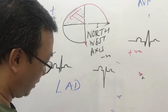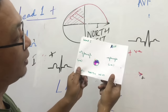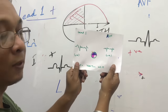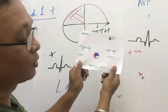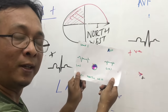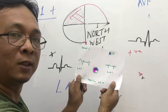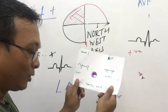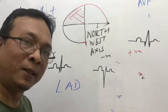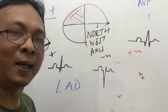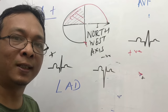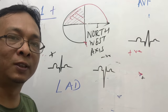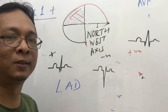And if lead 1 is negative and AVF is also negative, it is in the opposite direction — the northwest axis, which is very rare. By this method, you can diagnose the cardiac axis from your ECG strip in less than one minute.